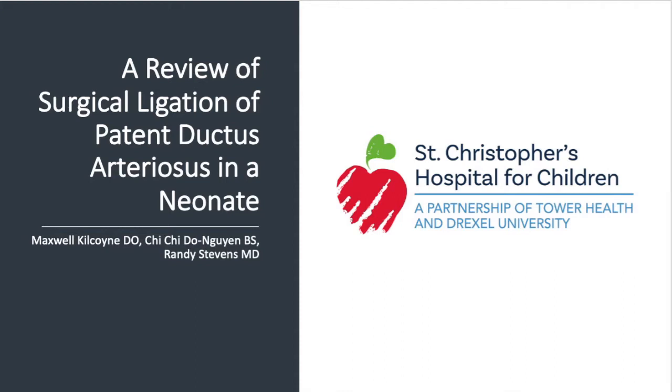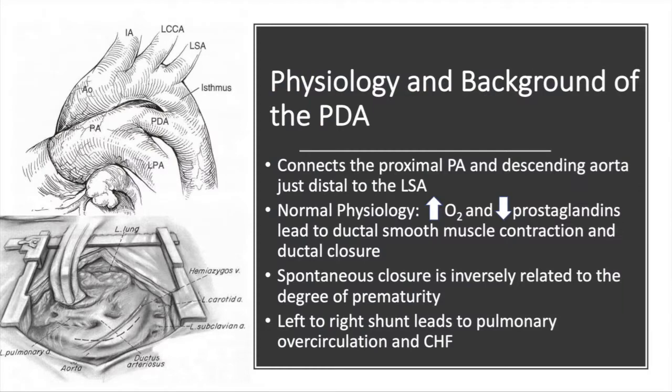A review of surgical ligation of a patent ductus arteriosus in a neonate. The PDA most commonly connects the proximal pulmonary artery to the descending thoracic aorta, just distal to the left subclavian artery, as seen in the illustration of the right oblique view and in an exaggerated version of the view seen during thoracotomy.